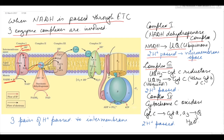Next is Complex 3, the ubiquinone-cytochrome C reductase complex, which catalyzes the transfer of electrons from ubiquinone to cytochrome C, through cytochrome B and C1. In this step, two protons are pushed into the intermembrane space. In the diagram, Complex 3 catalyzes the transfer of electrons from ubiquinone to cytochrome C1, then to cytochrome C, releasing two protons into the intermembrane space.